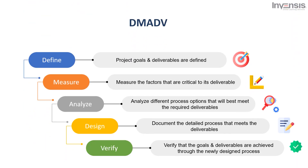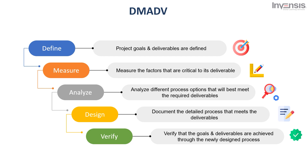DMADV is an improvement system for developing new processes at Six Sigma quality levels, with five phases: Define, Measure, Analyze, Design, and Verify. Define: project goals and deliverables are defined. Measure: once goals are identified, the team measures the factors critical to its deliverable. Analyze: teams analyze different process options that will best meet the required deliverables. Design: the team documents the detailed process that meets the deliverables. Verify: the team verifies that the goals and deliverables are achieved through the newly designed process.